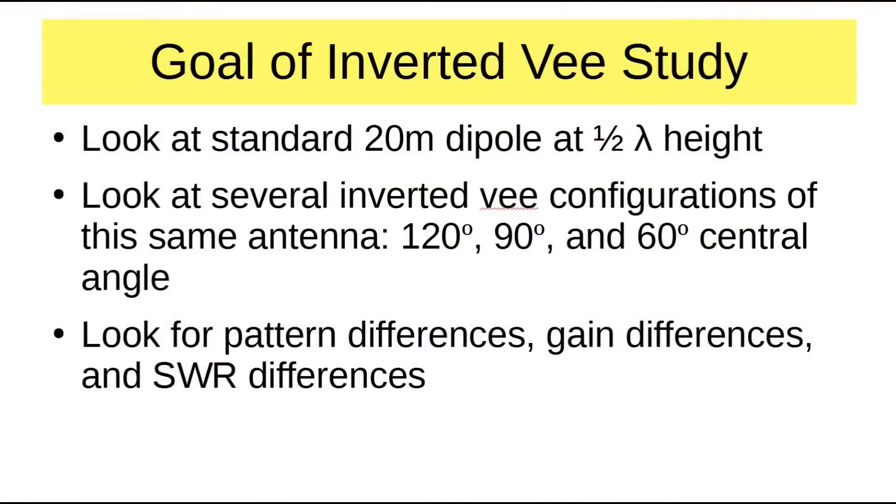The goal of the inverted V study is to look at a standard 20-meter dipole at half wavelength height, which is 33 feet. We're going to look at several inverted V configurations of the same antenna with 120-degree, 90-degree, and 60-degree central angle. Note that most sources say that the central angle should be 120 degrees, but we're going to get a little radical. We're going to look for pattern differences, gain differences, SWR differences, and so on.